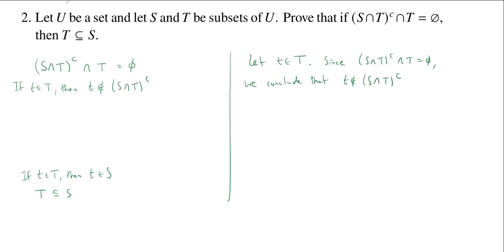Now what does it mean if you are not in the complement of a set? Well, if you have this big set U, and I have a subset S intersect T, then the complement is all the other stuff. So if I'm not in the other stuff, the complement, then I must be in the left-hand side here, in the intersection.